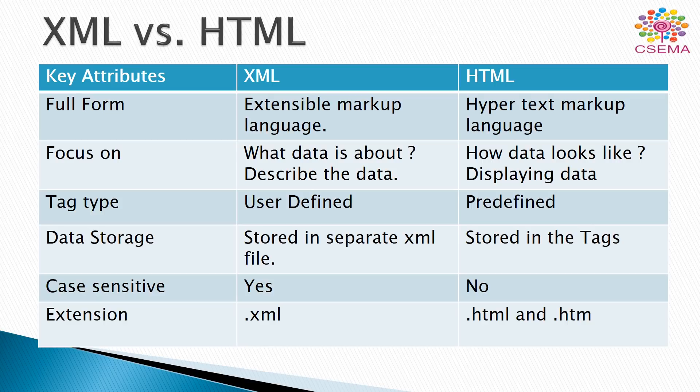XML files are stored in a separate XML file, but HTML contents are stored in the tags. So we say that XML files are used as data storage and HTML tags are used as data storage.